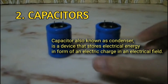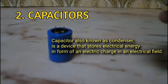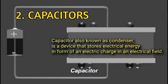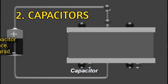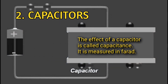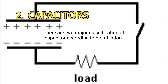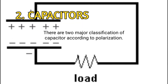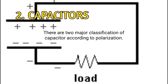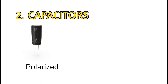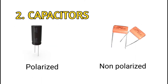Capacitor, also known as a condenser, is a device that stores electrical energy in the form of an electric charge in an electrical field. The effect of a capacitor is called capacitance, and it is measured in farads. There are two major classifications of capacitor according to polarization: polarized and non-polarized.